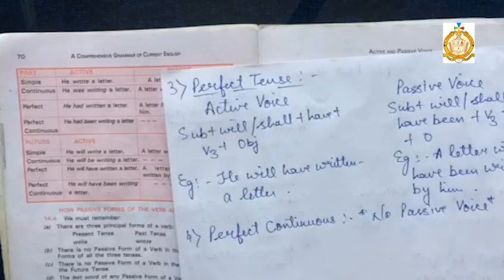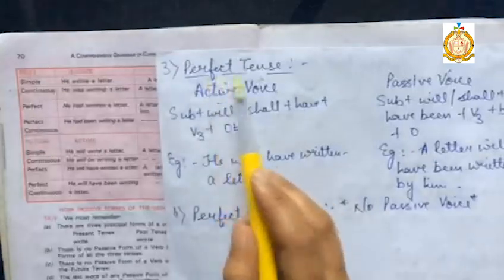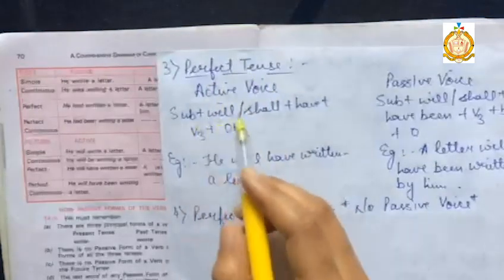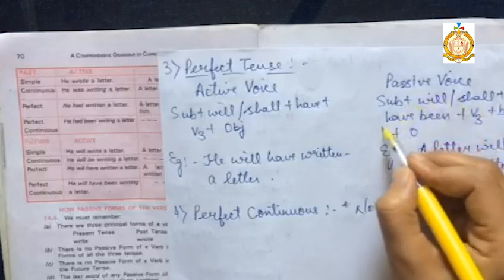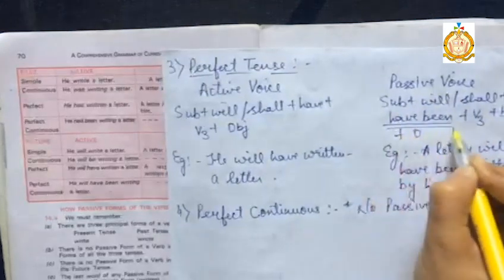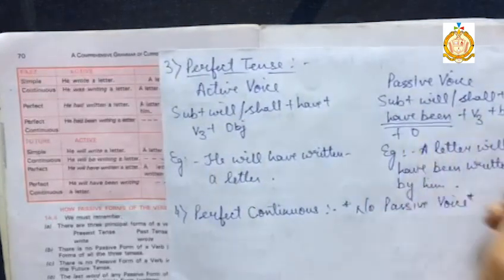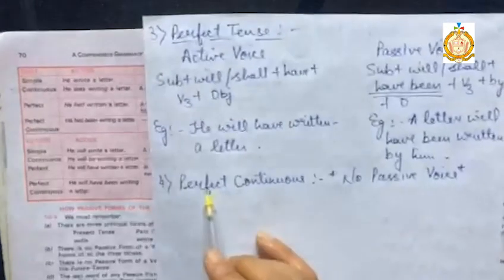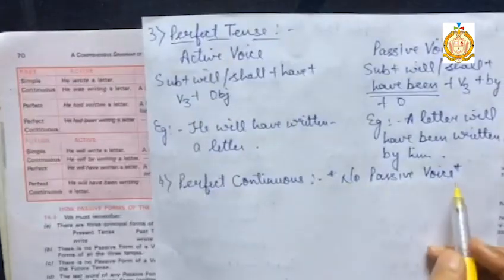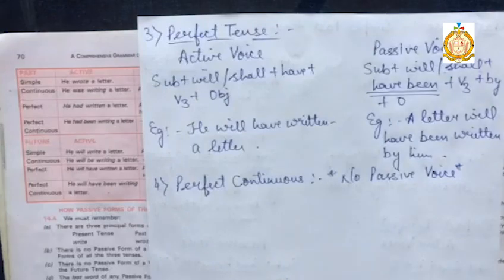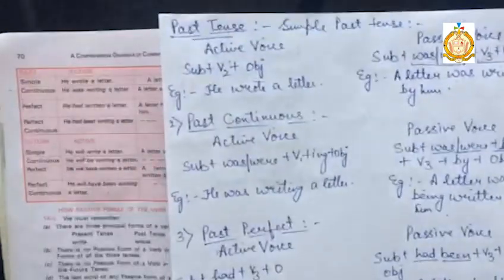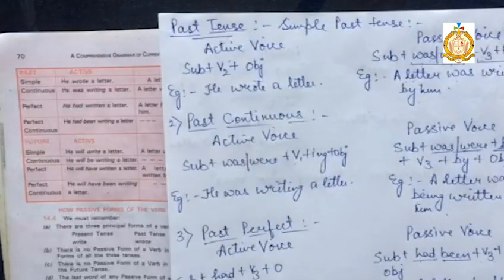Next comes future perfect tense. Its formation will be: Subject + will/shall + have been + verb's third form + by + object, with the rest remaining the same. We also don't have any passive voice for future perfect continuous tense. Please write these formations along with the examples as I have written here, and try to revise them. Thank you.